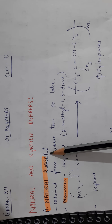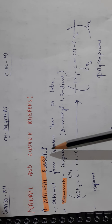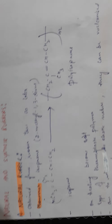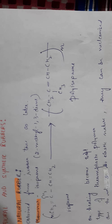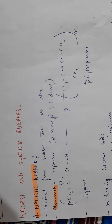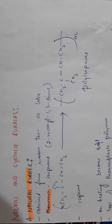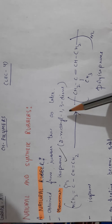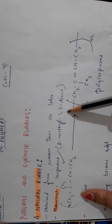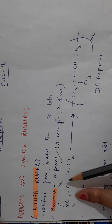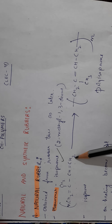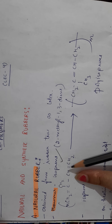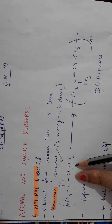Natural rubber is obtained from the latex of a rubber tree. The monomer is isoprene, with IUPAC name 2-methyl-1,3-diene, and its structure is CH2=C(CH3)-CH=CH2. An advantage of learning the IUPAC name of monomers is that you can remember their structures from the name.